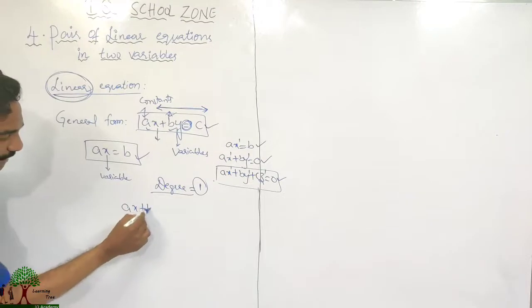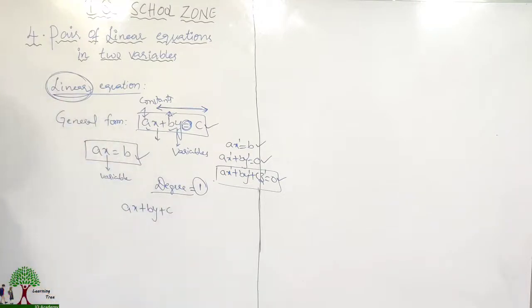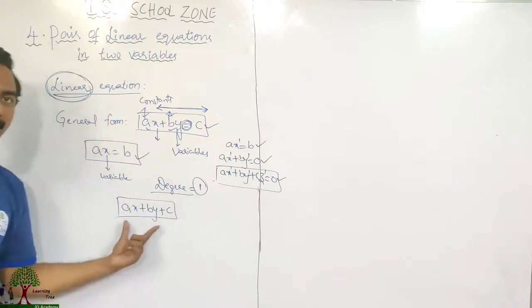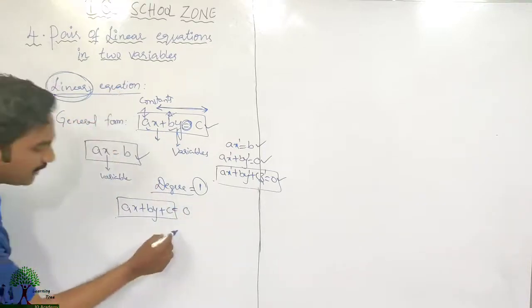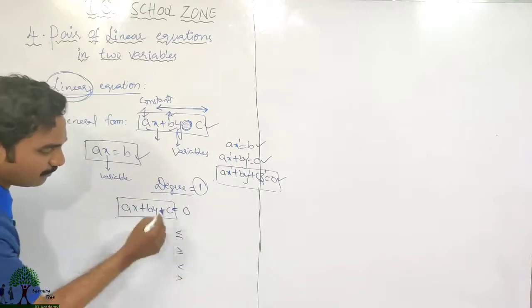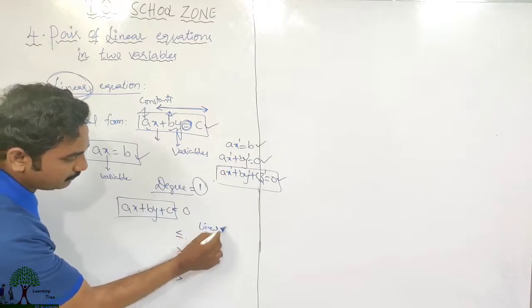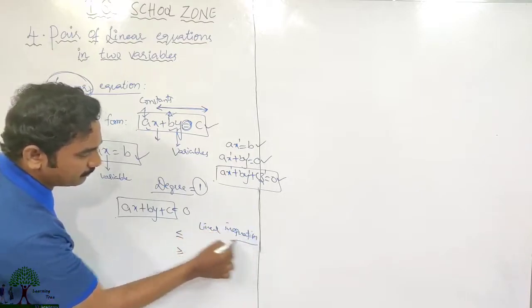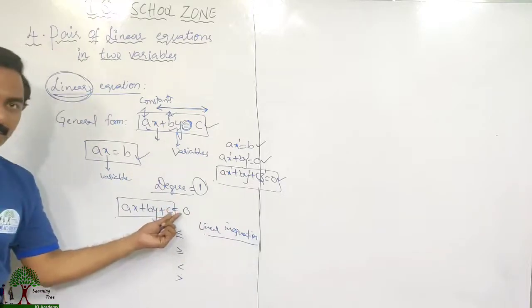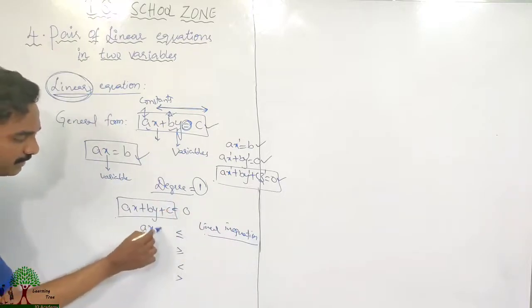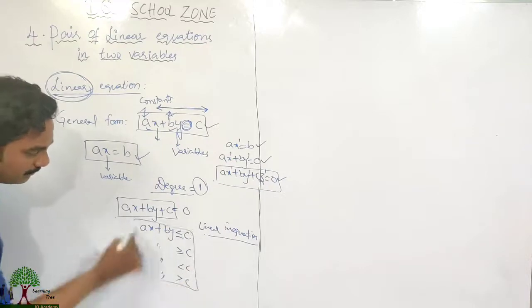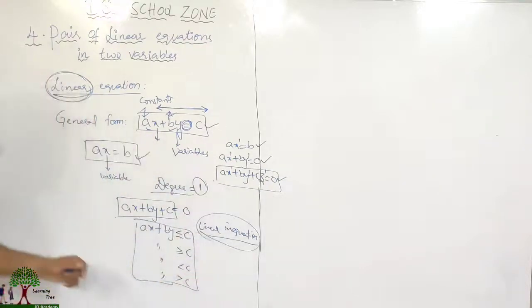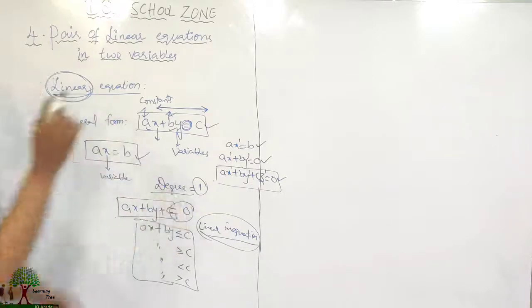If we don't keep an equals sign — for example, AX plus BY plus C — it is called a linear polynomial. If we keep equals to zero, it becomes a linear equation. If we use less than, greater than, less than or equal to, or greater than or equal to, then it becomes a linear inequation.